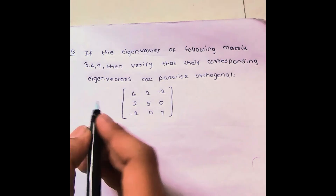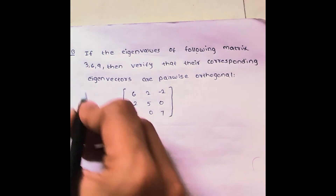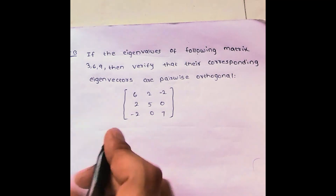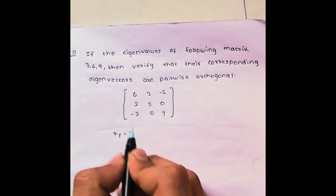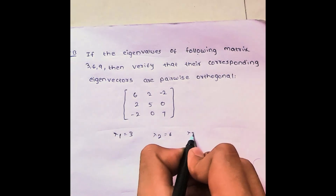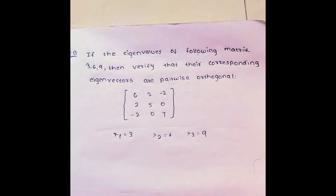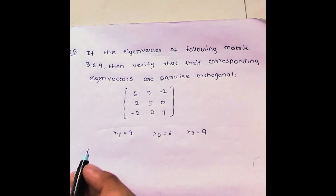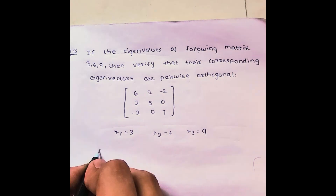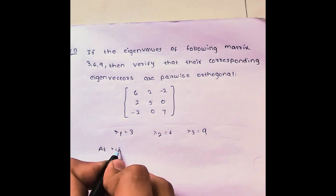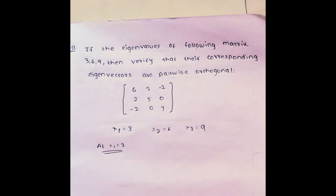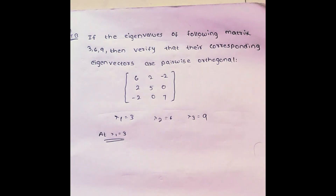The eigenvalues are already given: lambda 1 equal to 3, lambda 2 equal to 6, and lambda 3 equal to 9. So let us find the three eigenvectors. At lambda 1 equal to 3, we need to find the corresponding eigenvector.